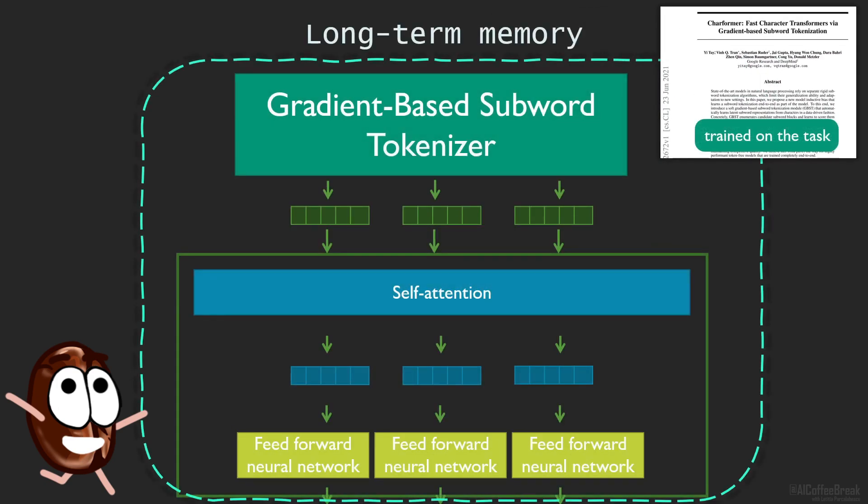These new representations from GBST are ready to be fed into your favorite Transformers. Especially because very little aspects in GBST are learned, optimization will not waste a lot of time on the tokenizer part. Also, the tokenizer reduces the sequence length, making the Transformer downstream also faster.